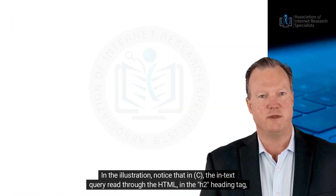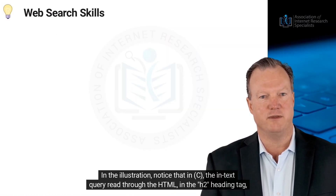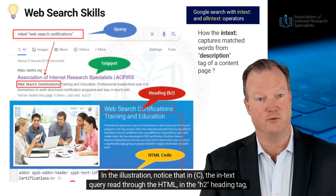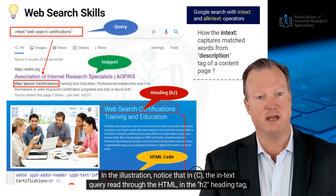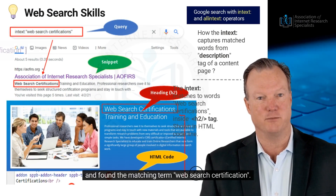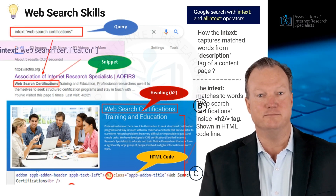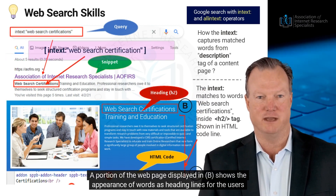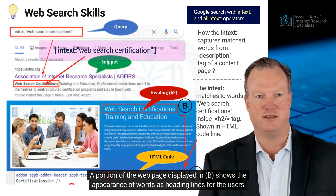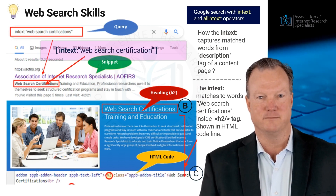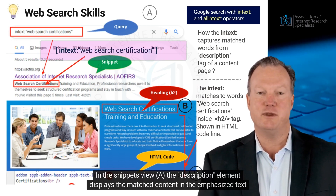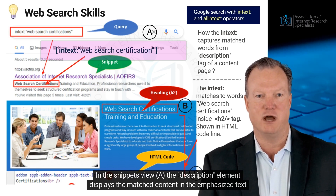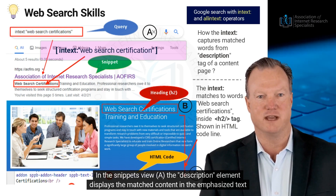In the illustration, notice that in C, the in-text query read through the HTML in the H2 heading tag and found the matching term 'Web Search Certification.' A portion of the web page displayed in B shows the appearance of words as heading lines for users to view. In the snippets view A, the description element displays the matched content in the emphasized text line.